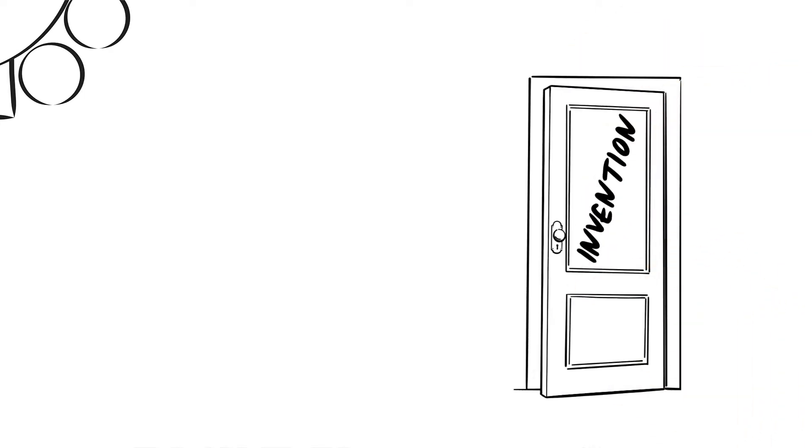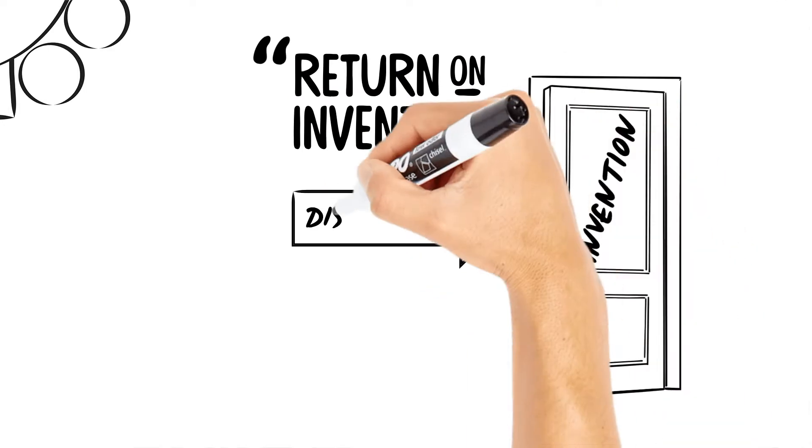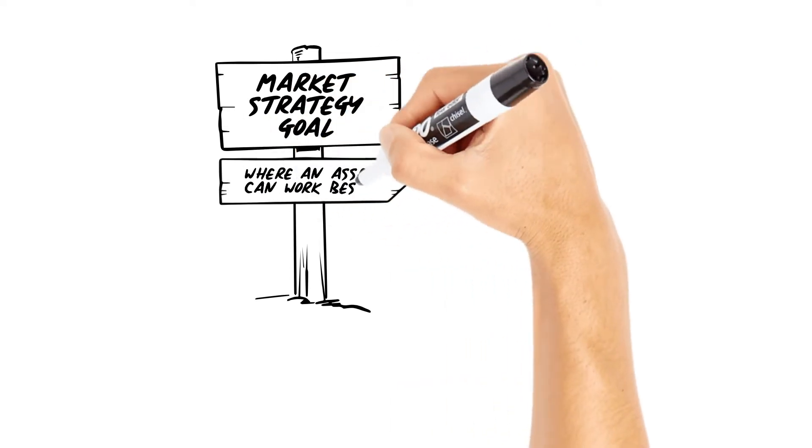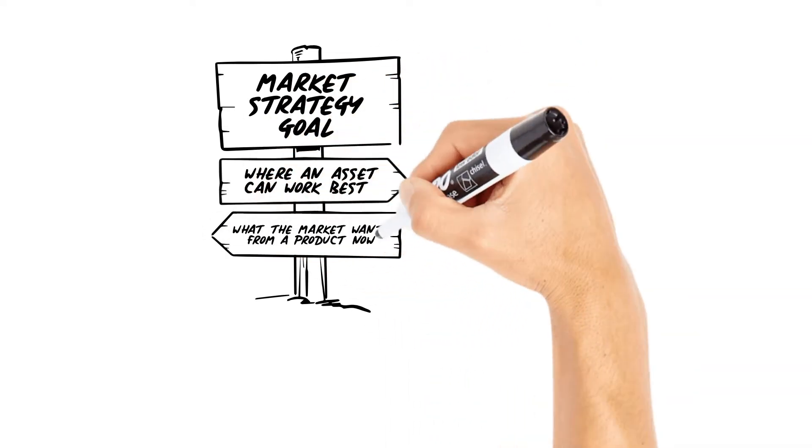We often use the phrase return on invention to distinguish invention from innovation. The goal of path to market strategy is to evaluate where an asset can work best and what the market might want from that product.